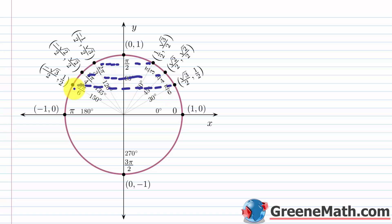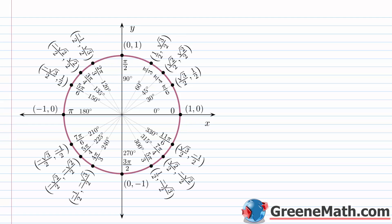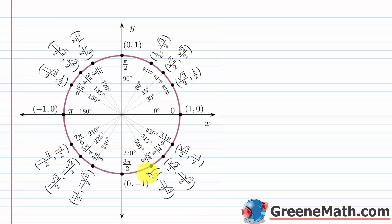Once you've reflected across the y-axis, reflect those points across the x-axis to get all remaining points. When reflecting across the x-axis, the x-value stays the same but the y-value becomes its opposite. So a point like (1/2, square root of 3 over 2) reflects to (1/2, negative square root of 3 over 2). If you can just remember the values in the first quadrant, you can use reflections across the y-axis and then across the x-axis to get all the remaining points.